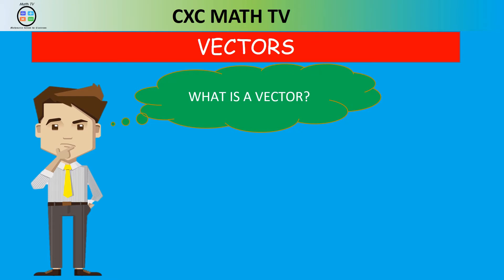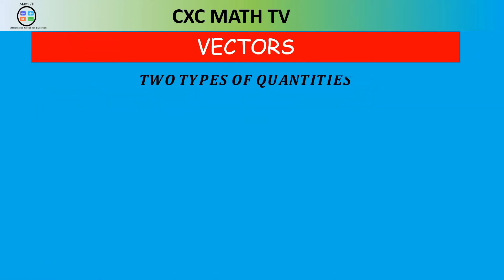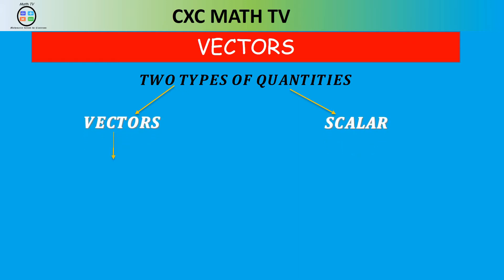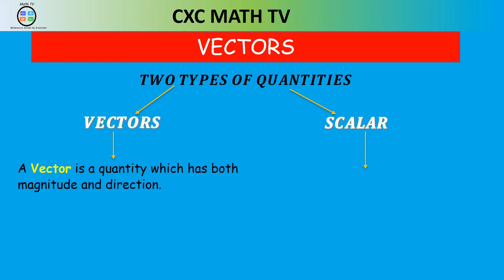So the first thing we need to ask ourselves is: what is a vector? Now before we understand what a vector is, there are two types of quantities. There's what is known as a vector quantity and a scalar quantity. A vector quantity is a quantity that has both magnitude and direction, whereas a scalar quantity is a quantity that only has magnitude.